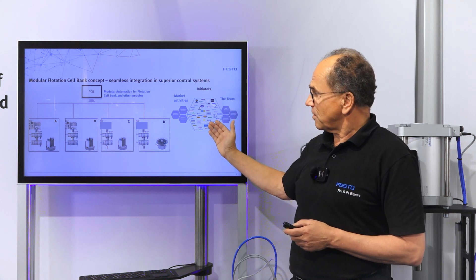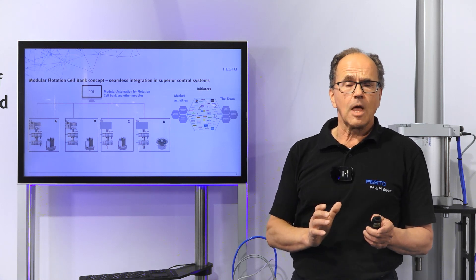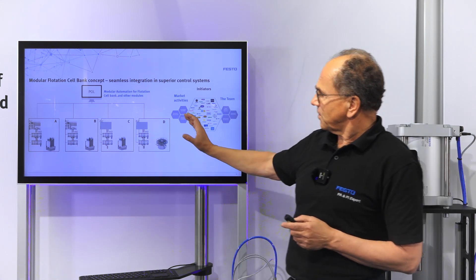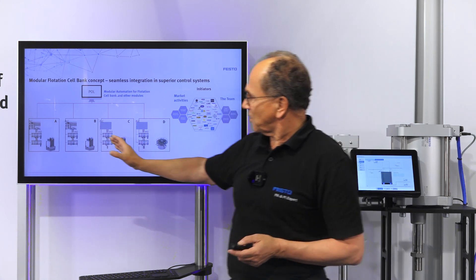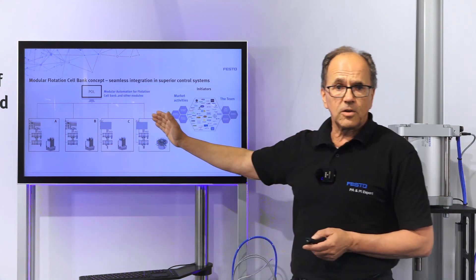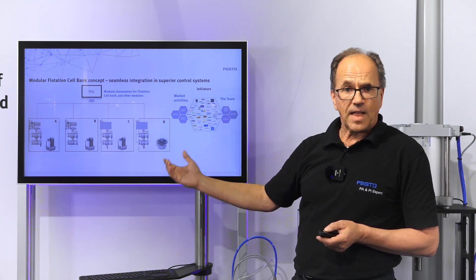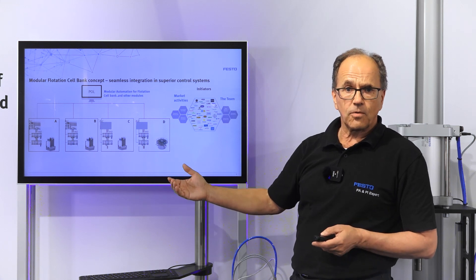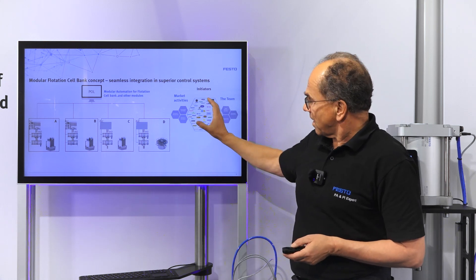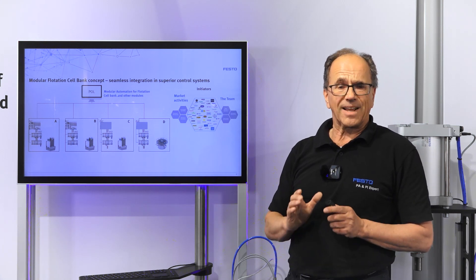What did this group do? They defined communication standards and data transfer standards during the engineering phase but also during the operation phase of a plant. If you have modules equipped — I will take a Festo PLC as an example — this module can seamlessly be integrated into a Siemens, ABB, Schneider, or Amazon superior system, because standards are defined both in the engineering phase and during operation. OPC UA, for example, for online data exchange, and AML in the engineering phase. We are pretty sure that this standard will have acceptance in the market.